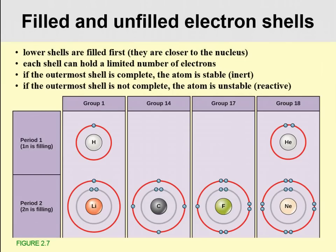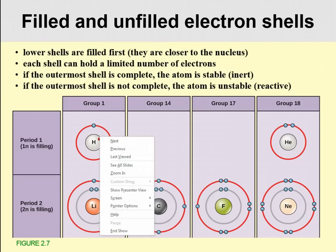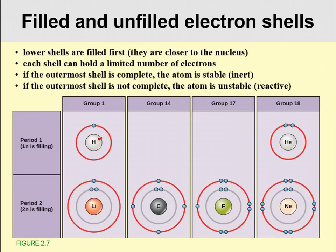Here we have a discussion of filled and unfilled electron shells. Electron shells are just a model of how our elements work. This is a good way to understand chemical bonding. In hydrogen, we have one electron shell, and lower shells are filled first. Each shell can hold a limited number of electrons — the first shell of hydrogen can hold two electrons, but it only has one. So if the outermost shell is complete, the atom is stable. If the outermost shell is not complete, the atom is unstable or reactive.